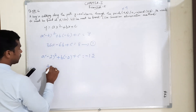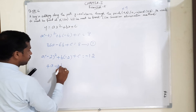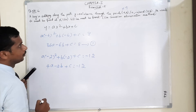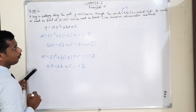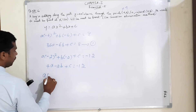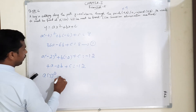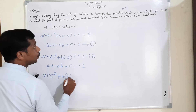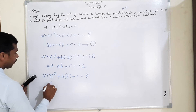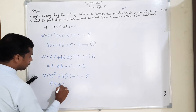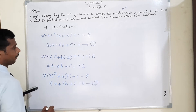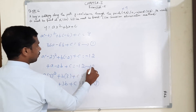So -2 squared means positive 4A, minus 2B, plus C is equal to -12. Now the third point is (3, 8), meaning x = 3, y = 8. So A(3²) + B(3) + C = 8. This is equation number 3, and the previous is equation number 2.